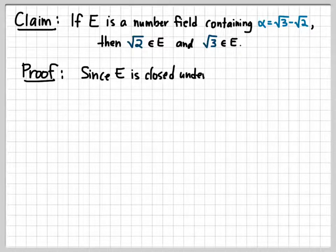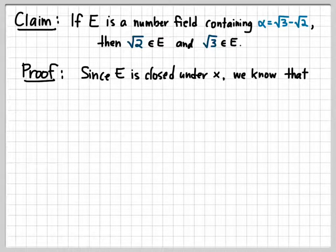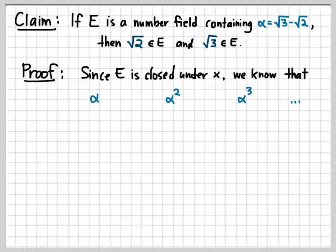Well, because E is a field, it's in particular a ring, and so it's closed under multiplication. So if this field contains α, it also has to contain α², α³, and all the higher powers of α as well. Those all must be elements of E.